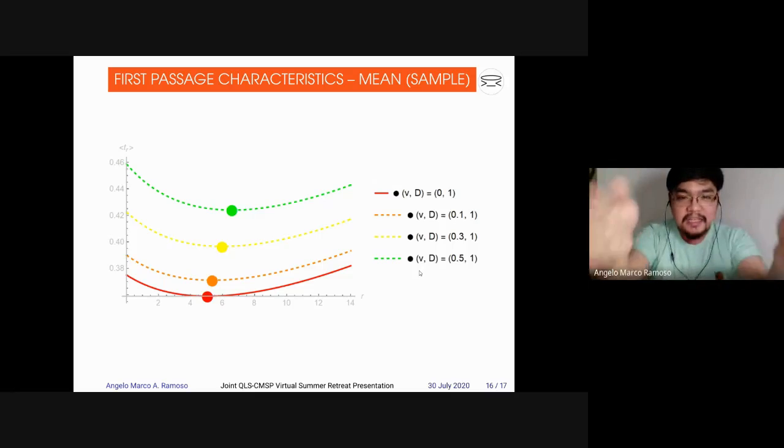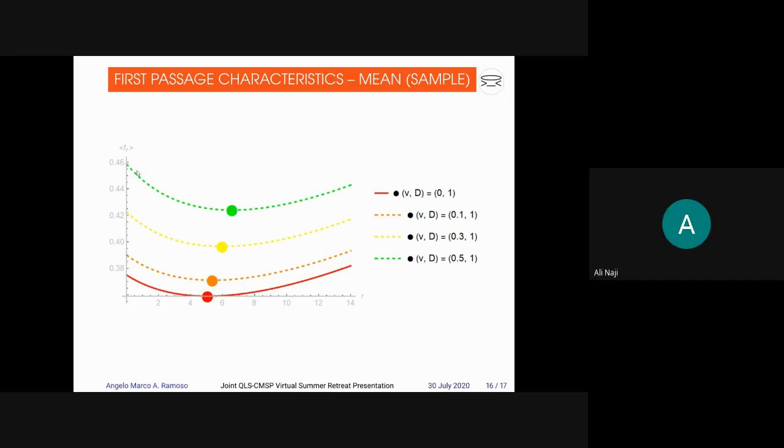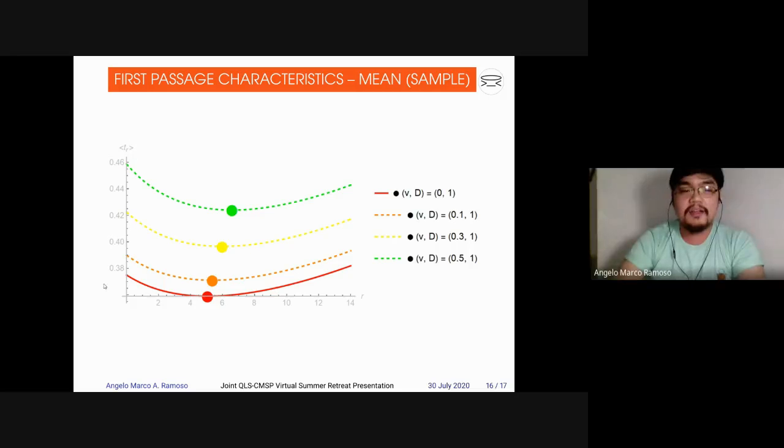As you can see in the shape of the plot, there are some resetting parts. We have less than one minute. We have to wrap it up. In here, it takes more time to go to the absorbing boundary. Then, if you increase the resetting rate, it will take less time. And then, if you go further, it will take, again, more time. So, there's an optimal resetting rate on this.